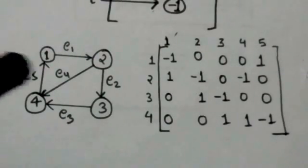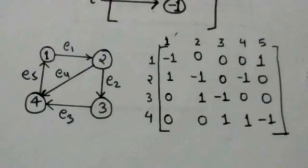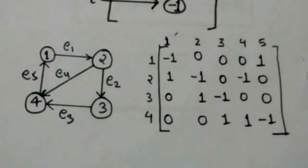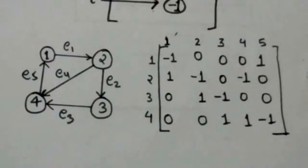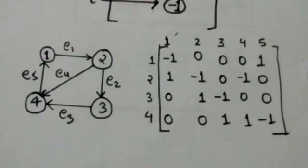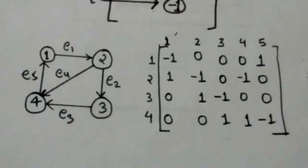There is an arc E3 from vertex 3 to vertex 4. Therefore in the incidence matrix, the entry at the third row and third column is minus 1, and the entry at the fourth row and third column is 1, and all other entries in the third column are 0.